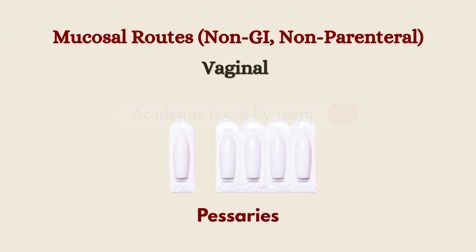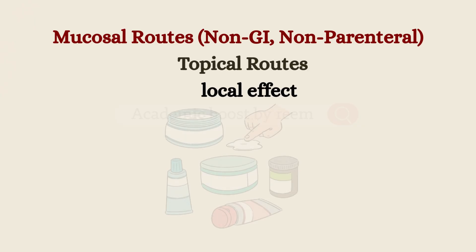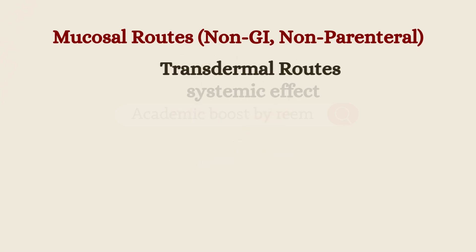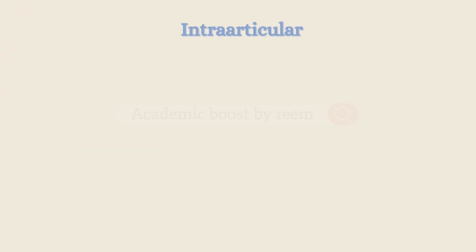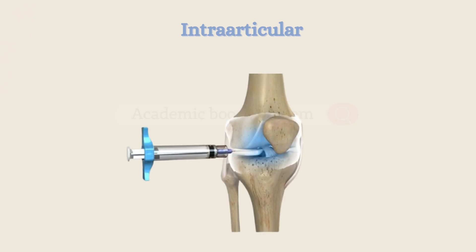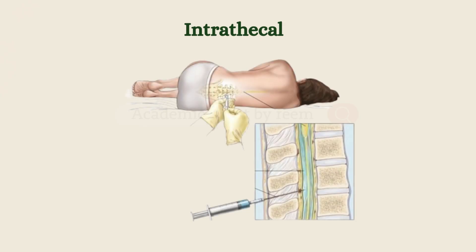The vaginal route is for female patients only, in which the drug is administered through the vagina. Topical routes are usually for local conditions, while transdermal routes are for systemic effect, such as transdermal patches. The intraarticular route delivers the drug into the synovial fluid of the joint, and the intrathecal route delivers it directly into the cerebrospinal fluid of the spinal cord.